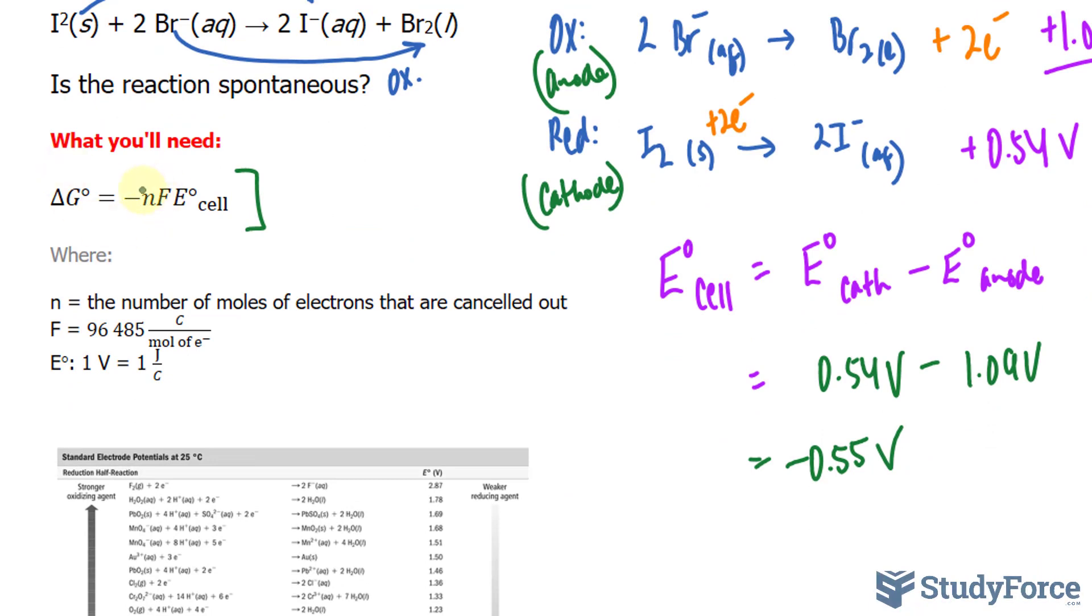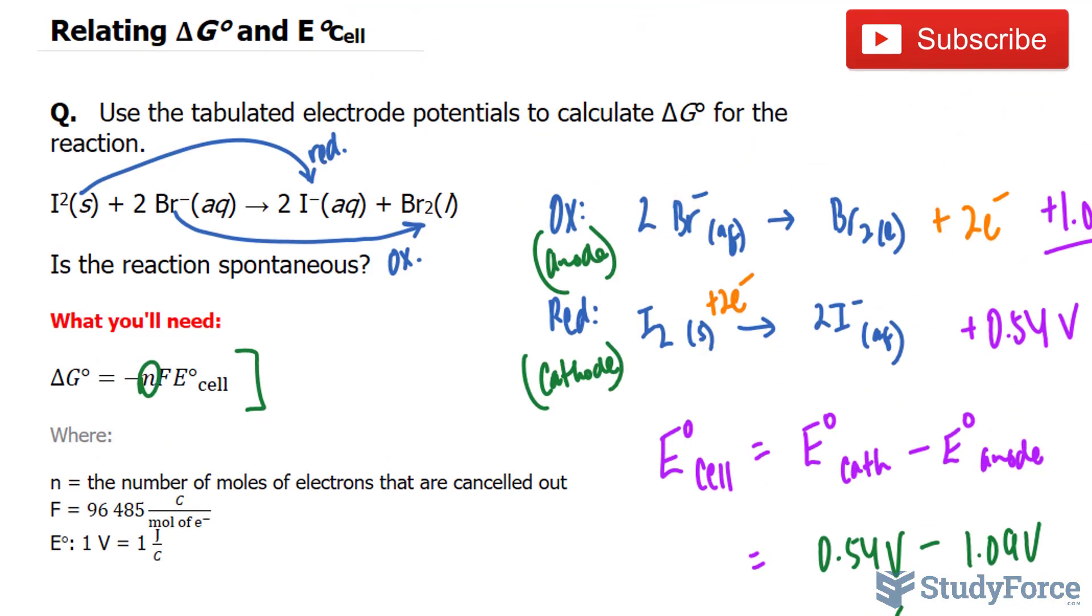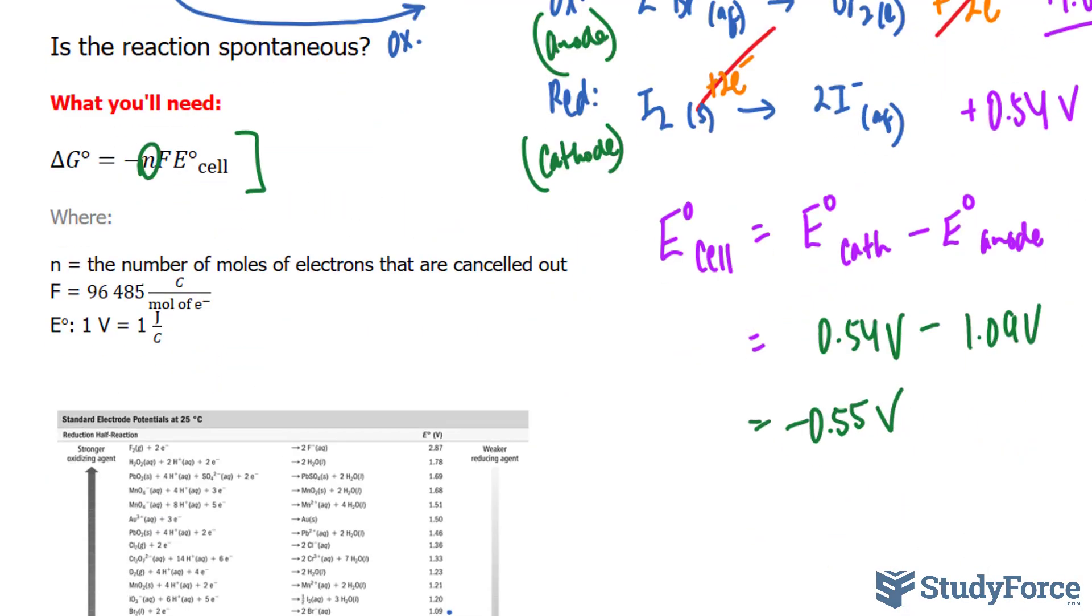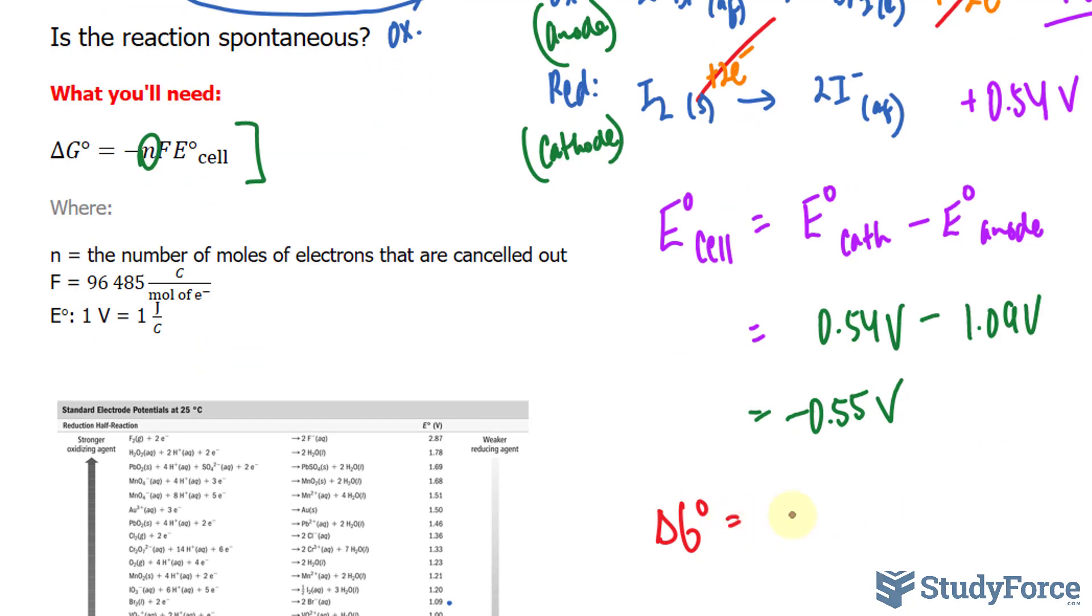We have delta G is equal to negative N. N is the number of moles of electrons that are cancelled out. If we look back at this reaction, two electrons were cancelled out on both sides. So we have delta G is equal to negative 2. F is a constant, 96,485 coulombs per one mole. That's in moles, so right from the get-go, that cancels out.